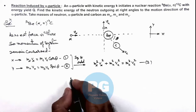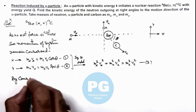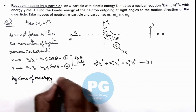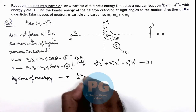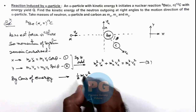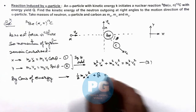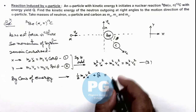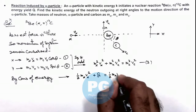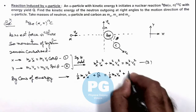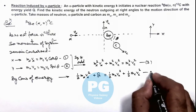Using energy conservation, we can write: the initial energy of the alpha particle was ½m_α·v_α², and the released energy in the reaction is q, so the total must equal the final energy of the particles. Therefore: ½m_α·v_α² + q = ½m_n·v_n² + ½m_c·v_c². This is our equation 4.